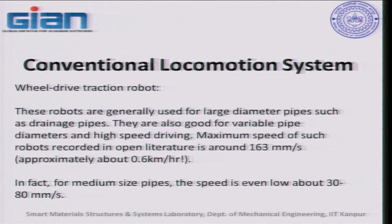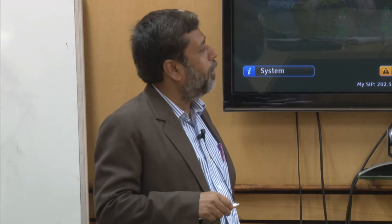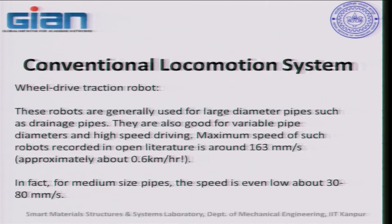For conventional locomotion, the wheel-driven traction robot is generally used for large-diameter pipes such as drainage pipes — good for variable pipe diameters and high-speed driving. The speed here is about 163 mm per second, or about 0.6 km per hour. It is much less than walking speed, but you have to keep in mind that not only speed matters — you also have to complete the scanning process, which is why the speed is kept low.